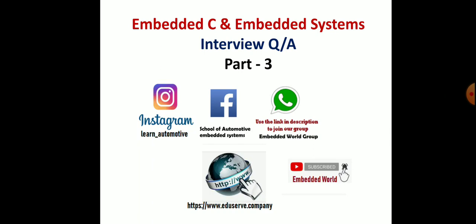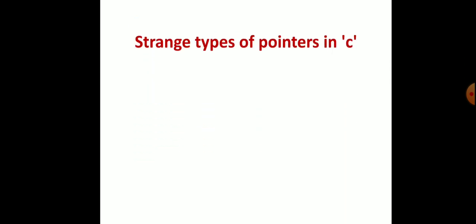The first question is: strange types of pointers in C. We have complex pointer, near pointer, far pointer, and huge pointer. So these are all the four strange types of pointers in C.